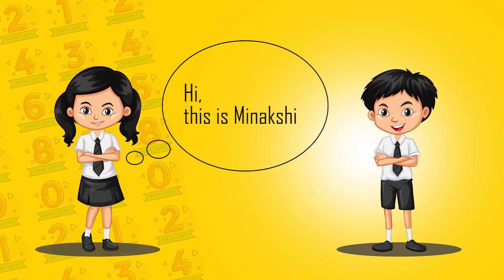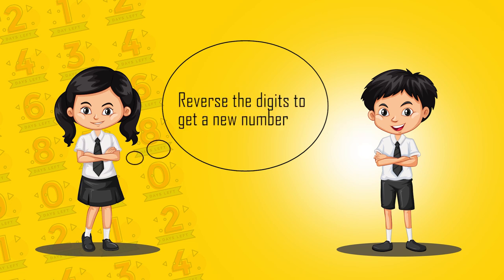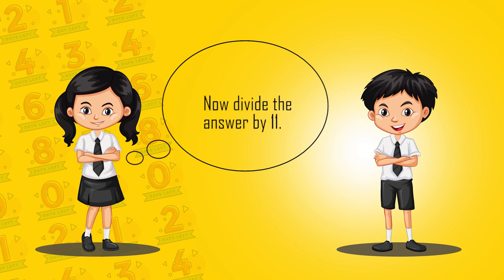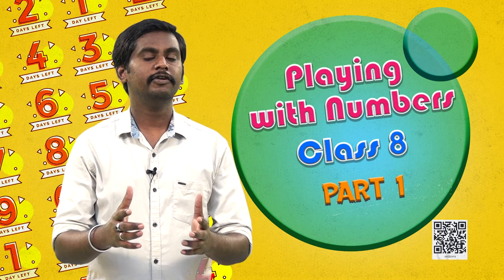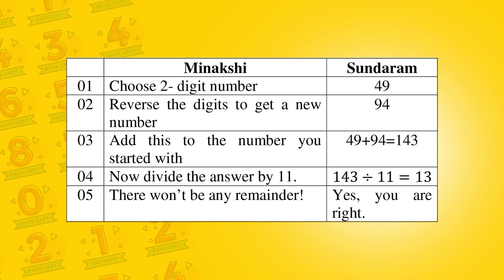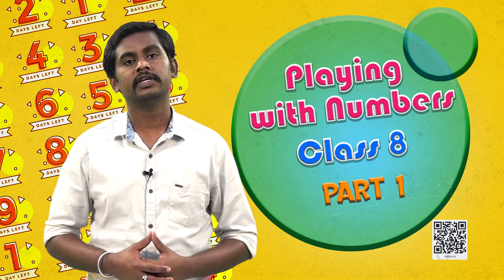Hi, this is Meenakshi. Hello, this is Sundaram. Choose a two-digit number, but don't tell me what it is. All right. Reverse the digits to get a new number. Okay. Add this to the number you started with. All right. Now divide the answer by 11. Okay. There won't be any remainder. Yes, you are right, but how did you know? Students, I'm sure that even in your case you have ended with no remainder. Well, let's have an overall view of their conversation.